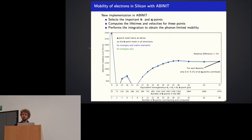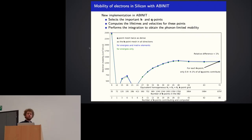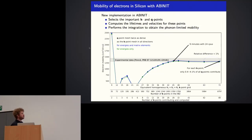We can also use the double grid technique to get the mobility. In silicon, the double grid in green gives essentially the same result: using a 45×45×45 K point and short-range matrix element grid, with a 90×90×90 Q point grid for the energies. The experimental data are also shown — it's always good news when we are not far from experiment. This computation took nine minutes with 24 CPUs, so it is quite optimized.